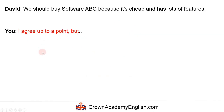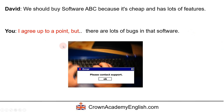Another one: "I agree up to a point, but..." and then your counter argument. Here you're saying you agree slightly, you agree partly — you don't agree with everything the person says, but here is my opinion. For example: "...but there are lots of bugs in that software." Again, you're showing that you're listening to the person and you respect their opinion, but you don't agree with it.